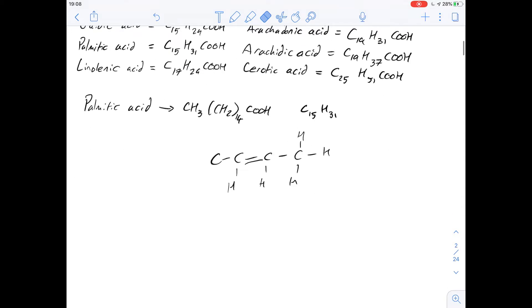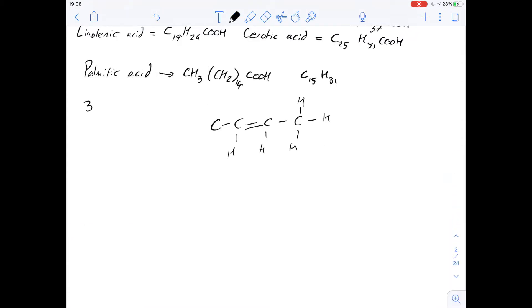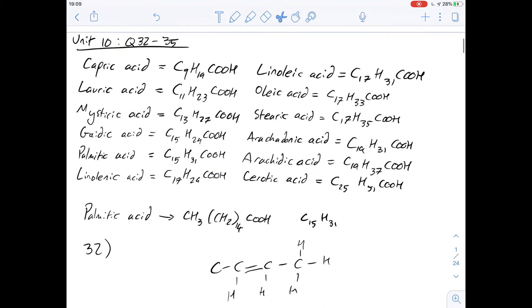Okay, so question 32 is really asking, how can you tell by looking at something's chemical formula whether or not it's a saturated fatty acid? Well, we've got an example here of palmitic acid, which is C15H31.